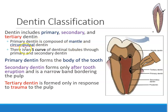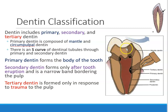Primary dentin has two types: mantle and circumpulpal dentin. Mantle means like a covering — the dark brown area you're looking at is your mantle dentin. The bulk of your dentin is circumpulpal dentin, shown in light brown. So primary dentin is made up of mantle dentin (the outline/covering) and circumpulpal dentin — circum for the circumference of the pulp.